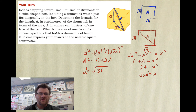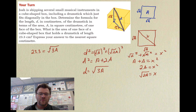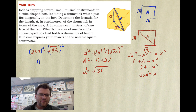The second part asks: what is the area of one face of the cube-shaped box that holds a drumstick of length 23.3 centimeters? We know d equals root (3A), so we set 23.3 equals root (3A), then square both sides to eliminate the square root, and divide both sides by 3. We find that the area is approximately 181 square centimeters.